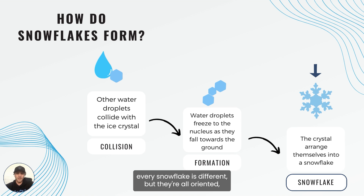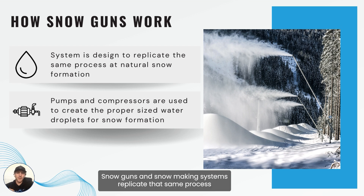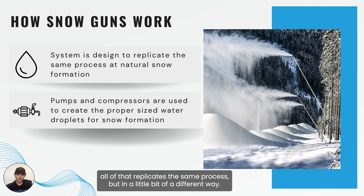Every snowflake is different, but they're all oriented according to the molecular structure of the ice crystal. Snow guns and snowmaking systems replicate that same process, but on the ground using equipment — pumps, water, reservoirs — all replicating the same process in a slightly different way.